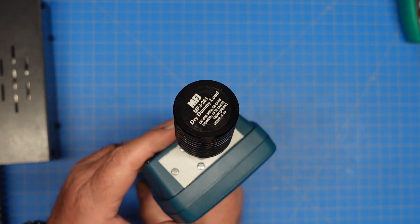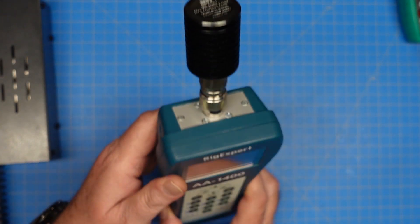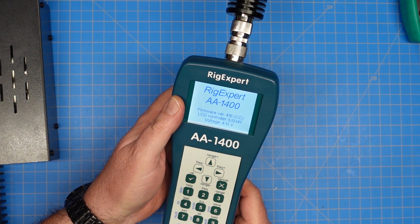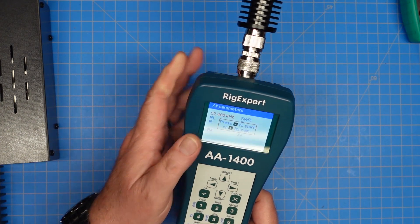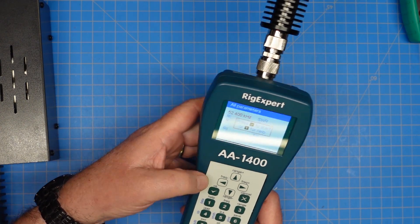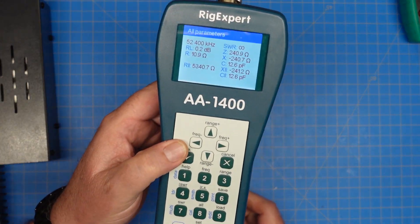This little guy, the MFJ-261 dummy load, we got pretty sketchy results. So I want to do a little bit of an in-depth dive with it. And before we go on to the second part of our test, I'm going to use a multimeter for that. Let's take a look at the stats for this.